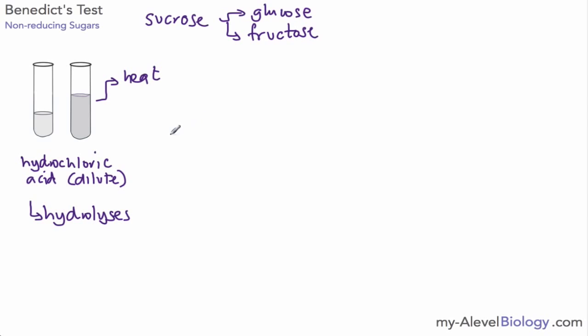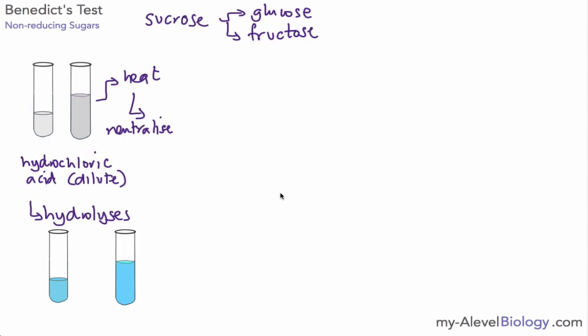And then we can go ahead and do the test. We do actually have to neutralize this first, and you would do that by adding an alkaline, testing it with pH paper to make sure it was neutral. And then you can go ahead and add your Benedict's reagent or Benedict's solution. So there we have our test solution.